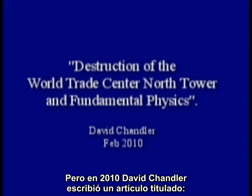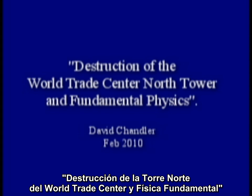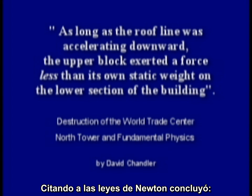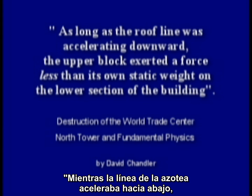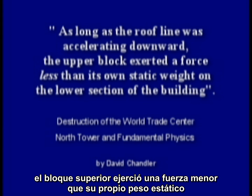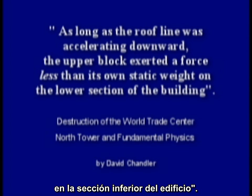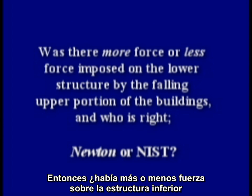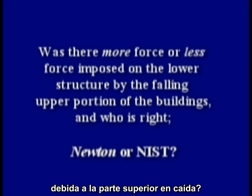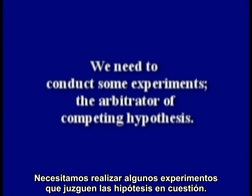But in 2010, David Chandler wrote a paper called 'Destruction of the World Trade Center North Tower and Fundamental Physics.' Citing Newton's laws, he concluded: as long as the roof line was accelerating downward, the upper block exerted a force less than its own static weight on the lower section of the building. So was there more force or less force imposed on the lower structure by the falling upper portion of the buildings? We need to conduct some experiments, the arbitrator of competing hypotheses.